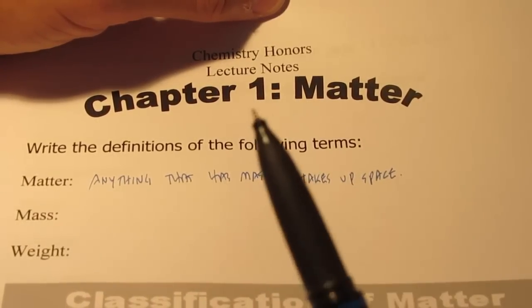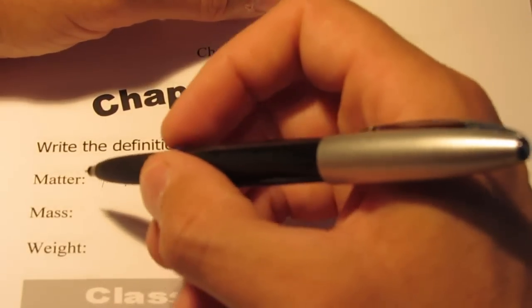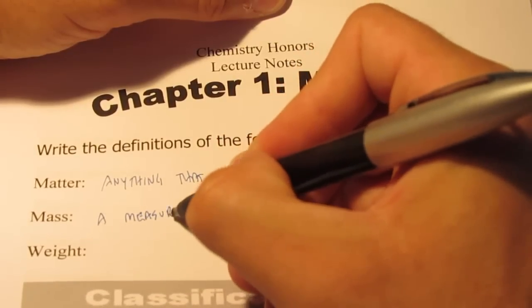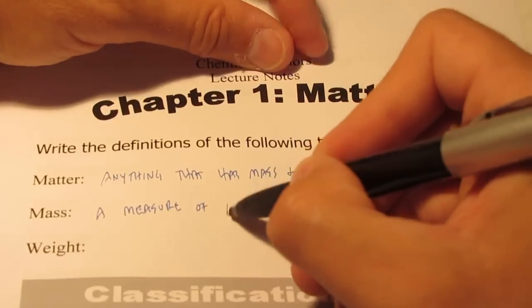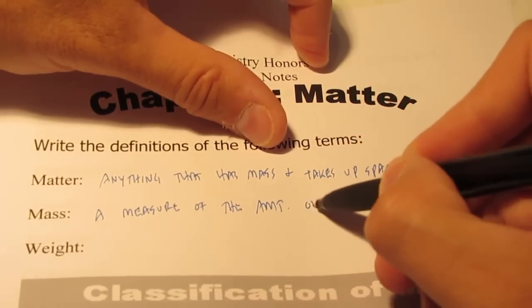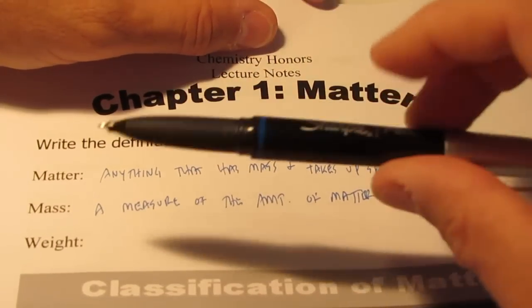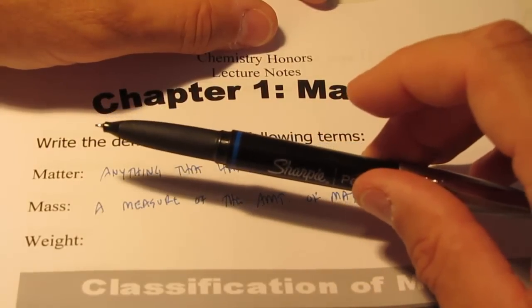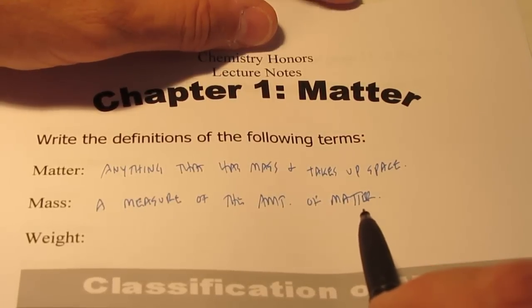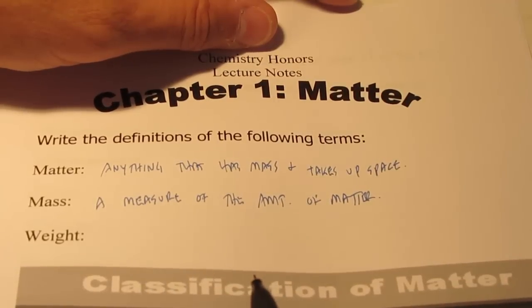Now let's define the term mass a bit more specifically. Mass is simply a measure of the amount of matter. So if I could measure the amount of matter in this pen, that would be the mass of this pen. That would be usually measured in the unit gram. We would measure mass using something called a balance, which we'll be using in the laboratory very soon.